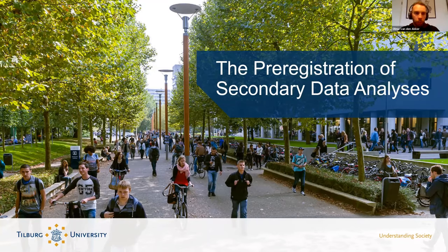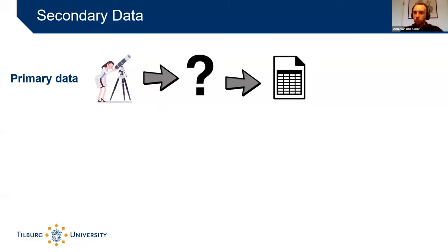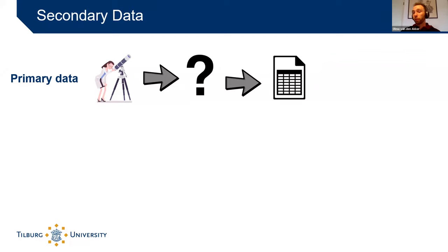Today we'll be discussing our template for the pre-registration of secondary data analysis. I'd like to start with the basics: what is secondary data? The name secondary data implies there's also primary data. Primary data is what you get when you follow the standard empirical cycle — a scientist has a research question or hypothesis and collects data specifically to address that question. That's primary data.